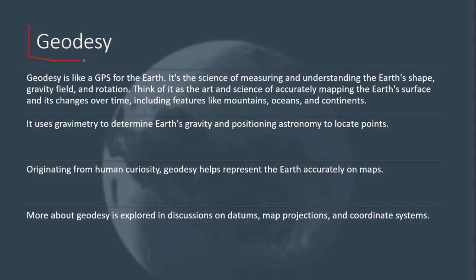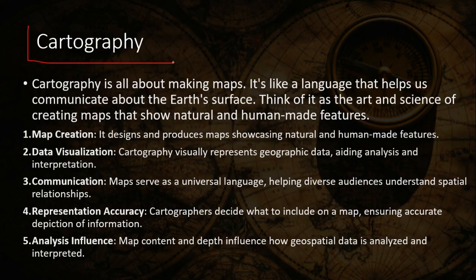Geodesy is like a GPS for the earth — it is the art and science of accurately mapping the earth's surface and its changes over time, studying features like mountains, oceans, and continents shifting over time. Geodesy uses gravimetry to determine the earth's gravity and position astronomy to locate points accurately. It helps represent the earth accurately on maps and covers datums, map projections, and coordinate systems.